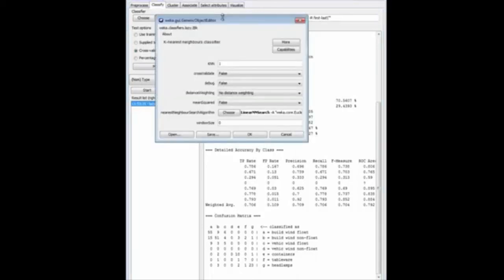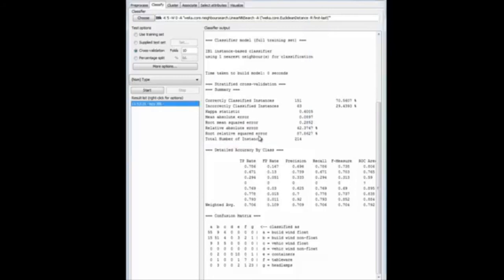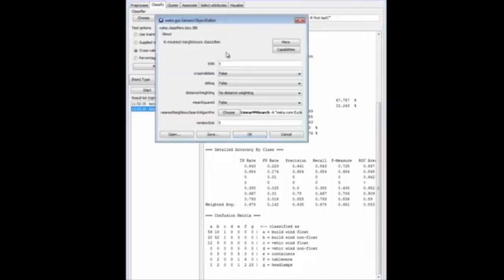Let's change the value of k. This k value here is set by default to 1, the number of neighbors to use. We'll change that to 5, and run that. In this case, we get a slightly worse result, 67.8%, with k as 5. This is not such a noisy data set, I guess.